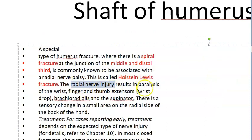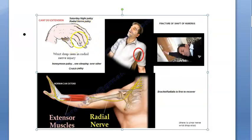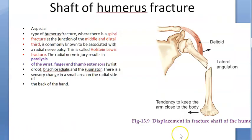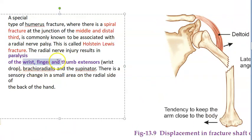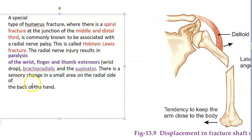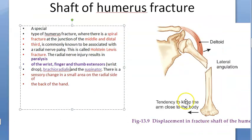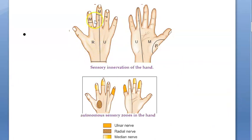The Holstein-Lewis fracture leads to radial nerve injury, resulting in paralysis of the wrist, finger, and thumb extensors. Everything is kind of flexed — wrist, fingers, thumb extensors are all paralyzed. Additionally, brachioradialis and supinator are affected, and the sensory area on the back of the hand supplied by the radial nerve is also affected.